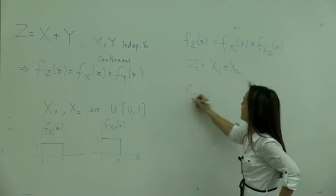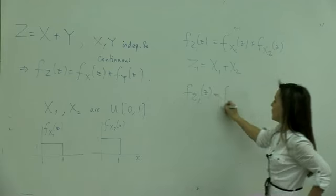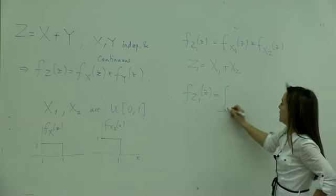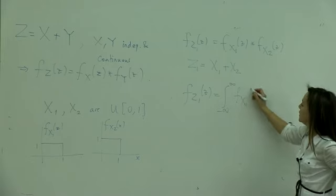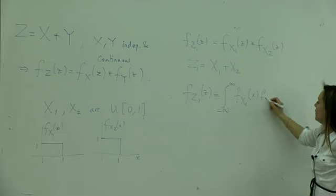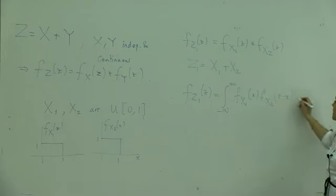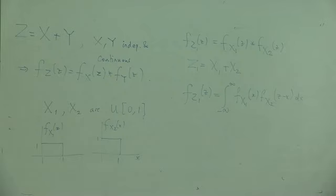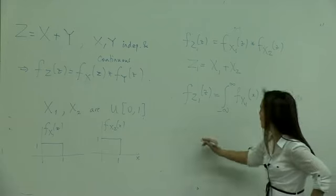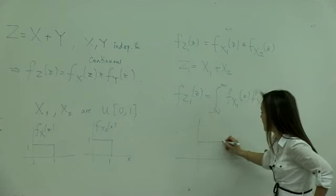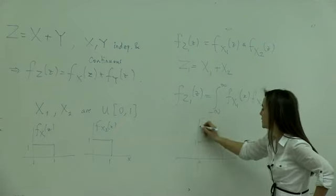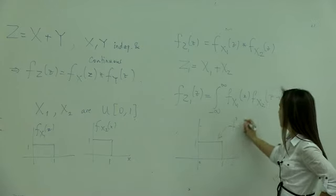fz of z is the integral from minus infinity to infinity of fx1 of x times fx2 of z minus x dx. All we need to do is determine the limits of integration, essentially, because the functions are extremely simple. fx1 of x is just flat from 0 to 1.